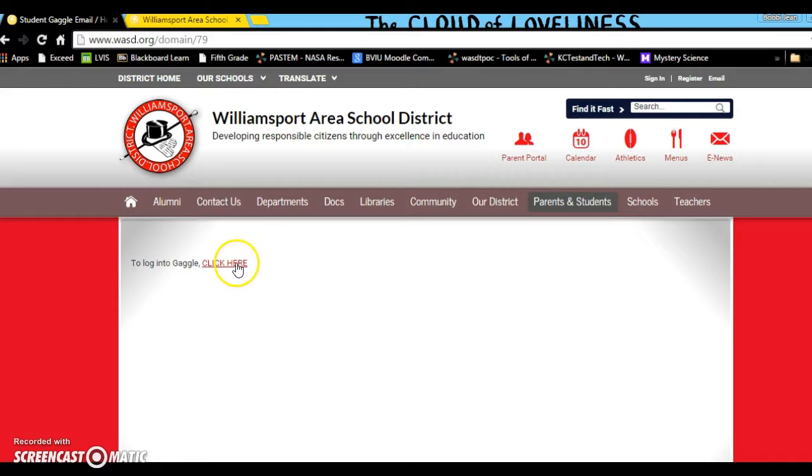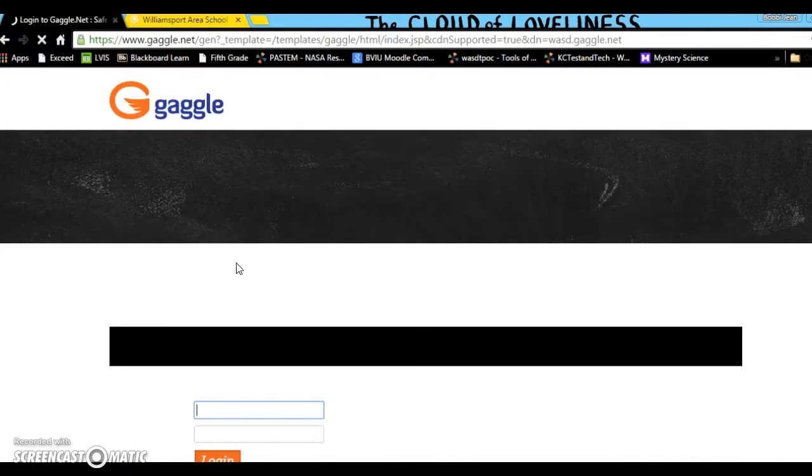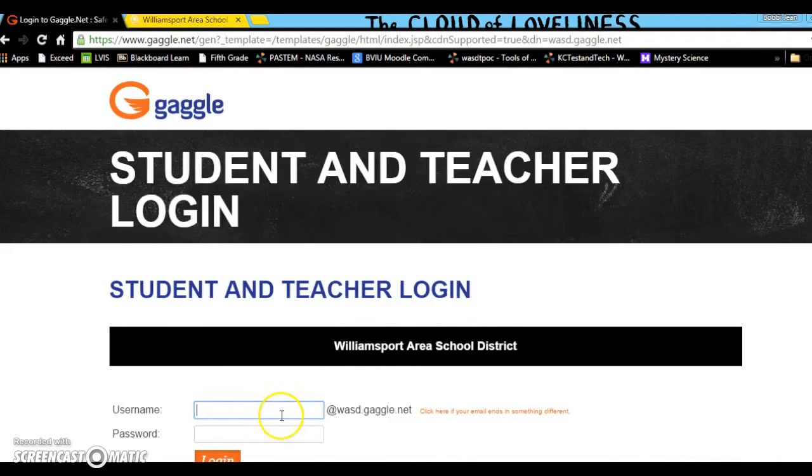From there, you're going to click the Click Here button. And you're going to put in your username and password. Your username is the same thing that you will use for AR, and your password is your number that you use for lunch. It's your student ID number. Then click Login.